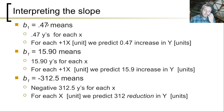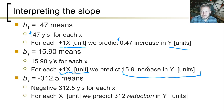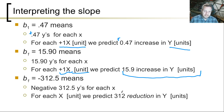So for instance, b1 is 0.47 means plus 0.47 y's for each x — so each plus 1x, whatever the units are, is plus 0.47 y units. B1 is 15.9 means 15.9 y's for each x. And b1 negative 312.5 means for every 1x, there are minus 312.5 y's — so 312 fewer y things, whatever the unit is.